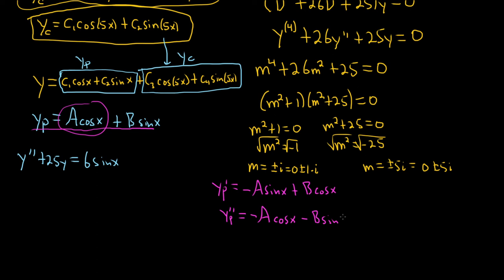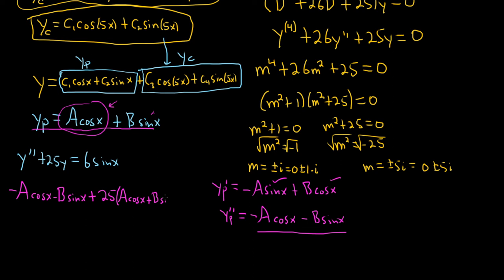Let's plug it in. We substitute y_p'' and y_p into the DE: (−a cos x − b sin x) + 25(a cos x + b sin x) = 6 sin x. Distributing the 25: −a cos x − b sin x + 25a cos x + 25b sin x = 6 sin x.